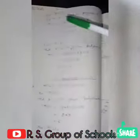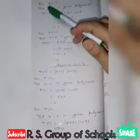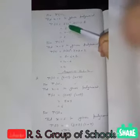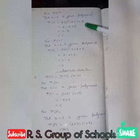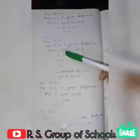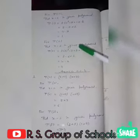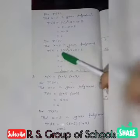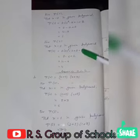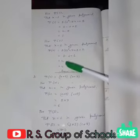For p(1), put x equal to 1 in the given polynomial: p(1) equals 2 into 1 square minus 3 into 1 plus 2, which gives 2 minus 3 plus 2 equals 1. For p(2), put x equal to 2: p(2) equals 2 into 2 square minus 3 into 2 plus 2, giving 8 minus 6 plus 2 equals 4.